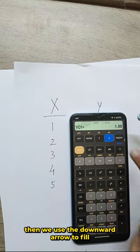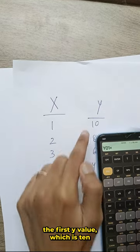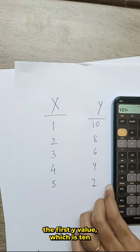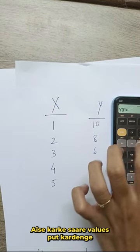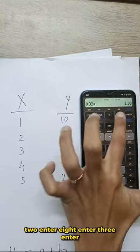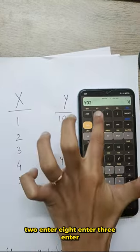Then we use the downward arrow to fill the first y value which is 10. 10, enter. We will put all the values. 2, enter. 8, enter.